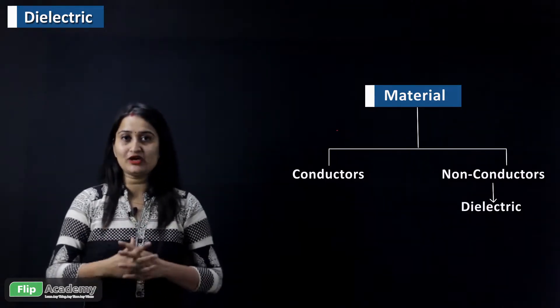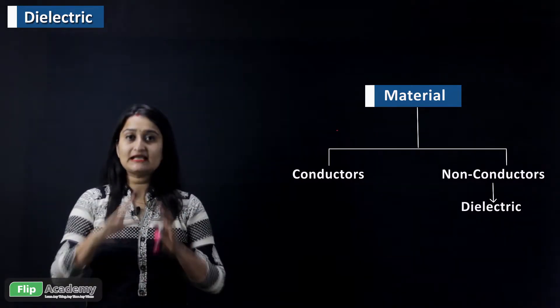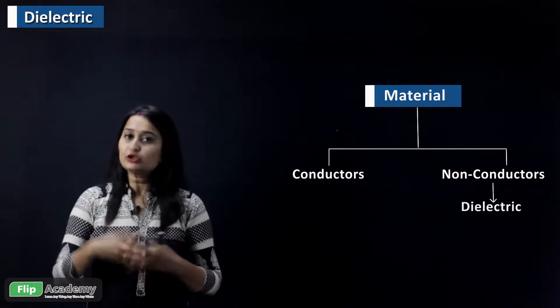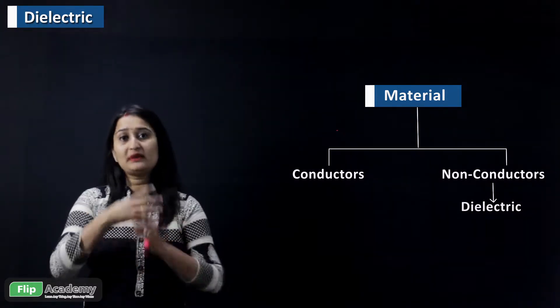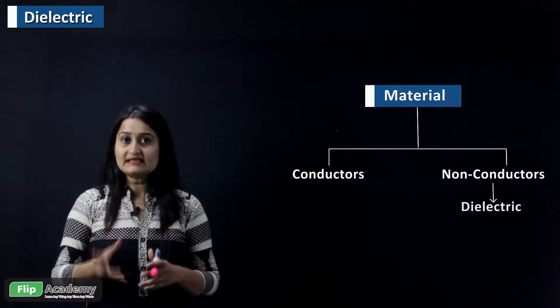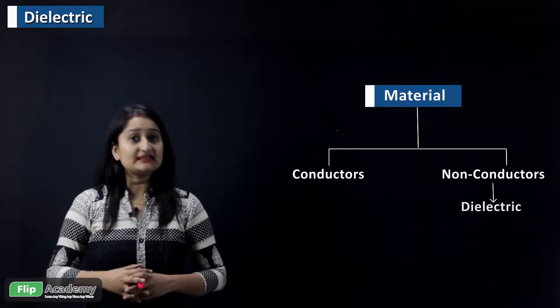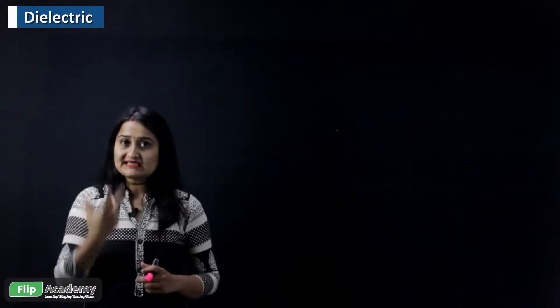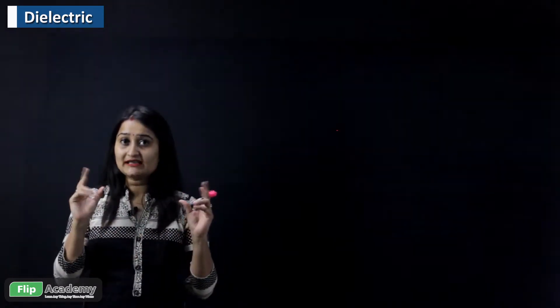Like an insulator, the dielectric does not allow electric current to flow through it. The insulator contains no free electrons — they are tightly bound to the nucleus and cannot roam inside, which is why they cannot conduct electricity. The same is true for dielectric, but the dielectric is somewhat different from a regular insulator.